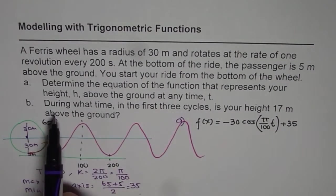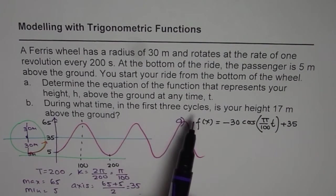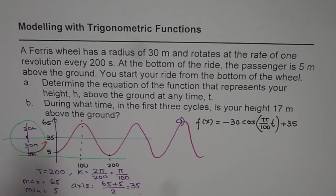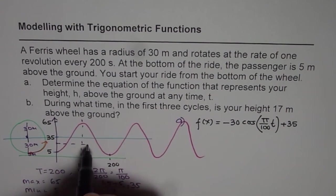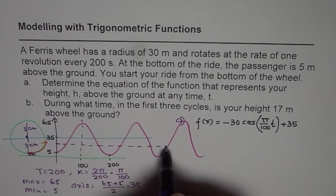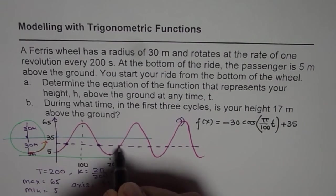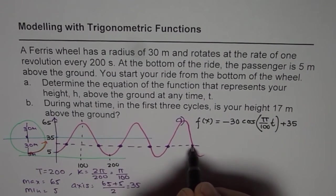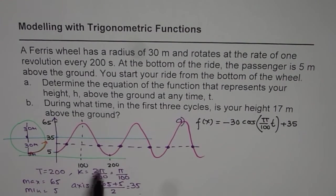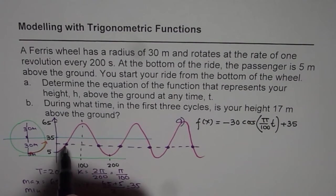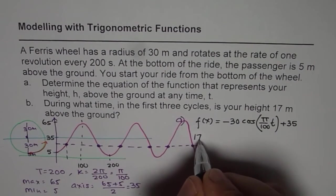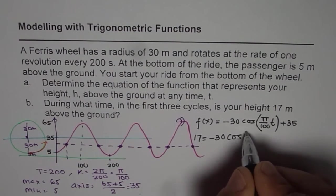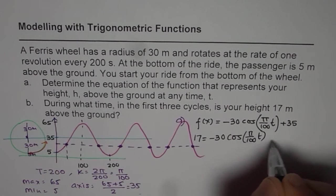Part B: During what time in the first 3 cycles is your height 17 meters above the ground? 17 meters is here on the graph. We need to find the time in the first 3 cycles. Basically we are looking for these intersection times. If we find the times in the first cycle, we can add 200 seconds to find the other cycles. So let's find the first point by setting h = 17: 17 = minus 30 cos(π/100 · t) + 35.